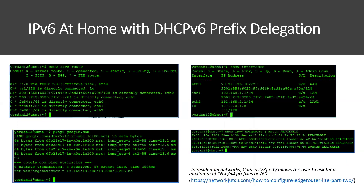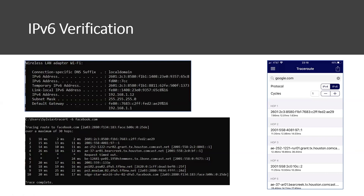As you can see here, I'm using Linux commands on my firewall to check my IPv6 interfaces, neighbors, routes, and pings. The left-hand side is my Windows 10 laptop IPv6 verification — this is simply ipconfig and a traceroute -6 to facebook.com. And the right-hand side is my iPhone traceroute to google.com using Hurricane Electric network tools.